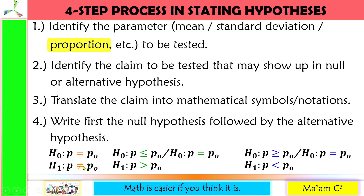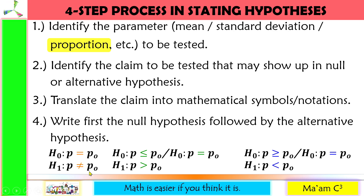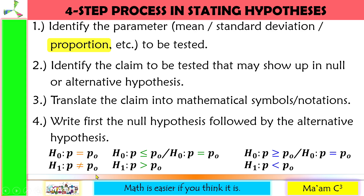Here are the possible hypotheses depending on the type of test. P here is the population proportion, while P sub O is the hypothesized proportion. Take note that a hypothesis is a statement about the population, so the value of P sub O must be about the population and not the sample.